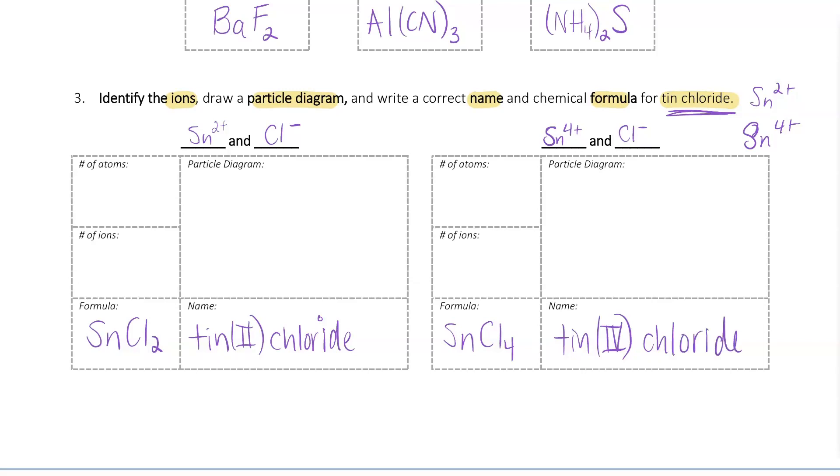I'm going to go ahead and draw my particle diagram. I'm going to color code mine to make it a little bit easier. Let's see here. Let's do maybe blue for our tin. I'm going to need one of each of those. And then they're going to have different charges. This one's going to be plus 2. This one's going to be plus 4. And then maybe I'll do green for my negative charges. Now, remember, positive and negatives attract, so we want them to be on opposite sides because like charges repel. Maybe I go something like this. 1, 2, 3, 4 negatives on my tin 4 chloride.